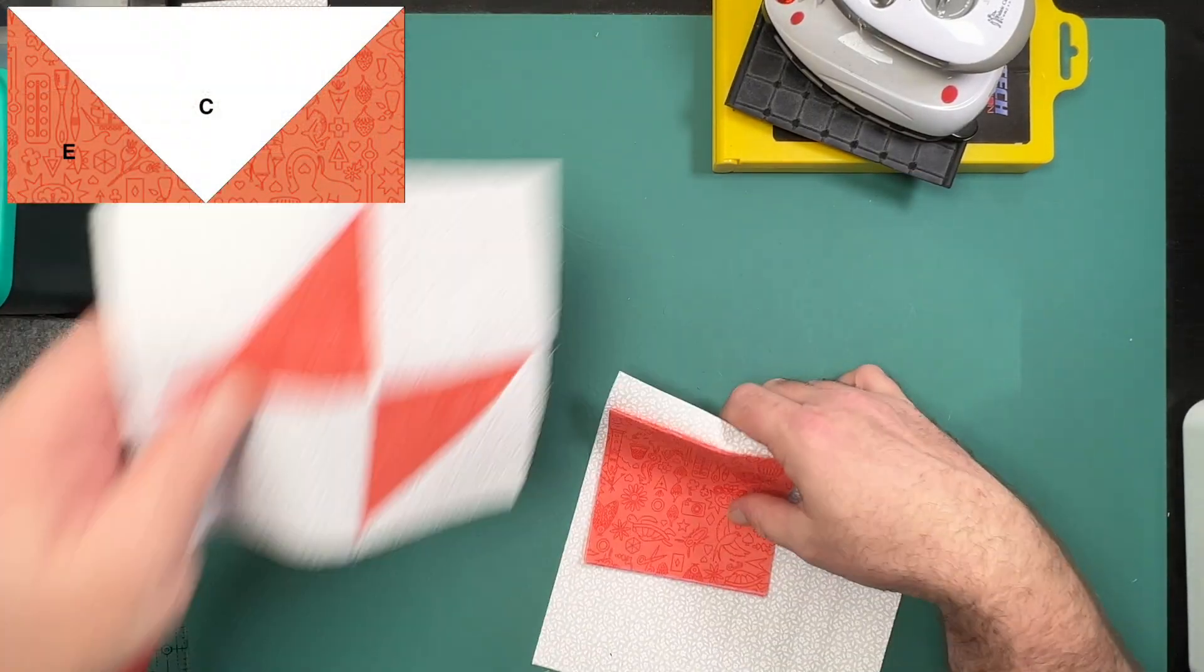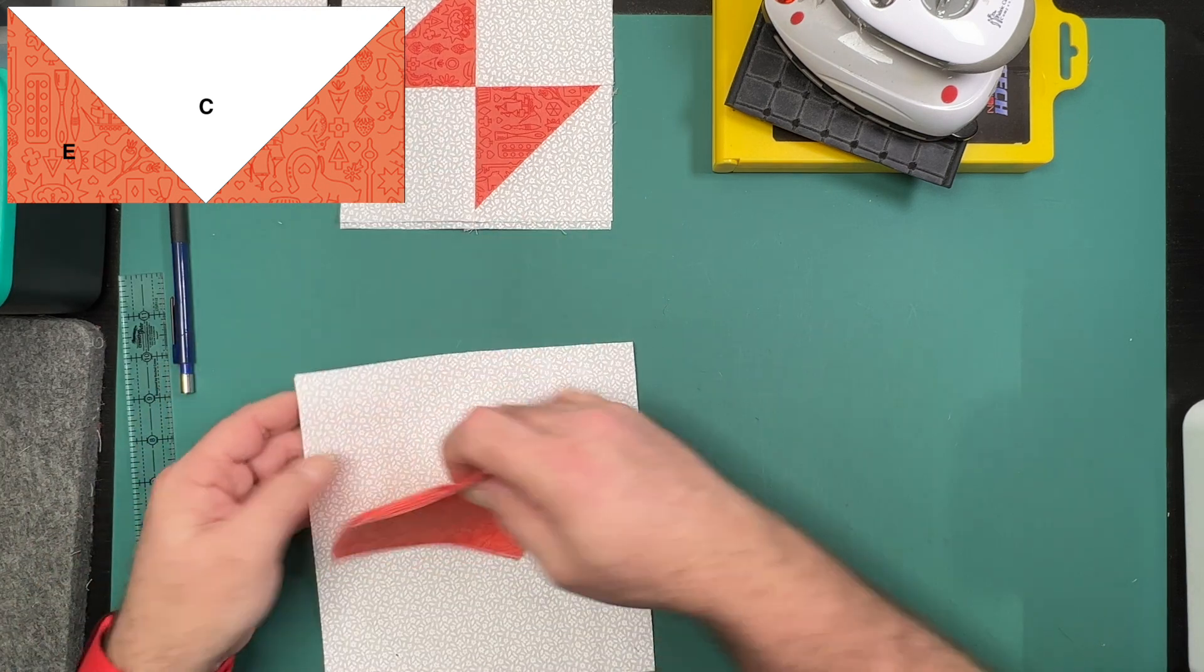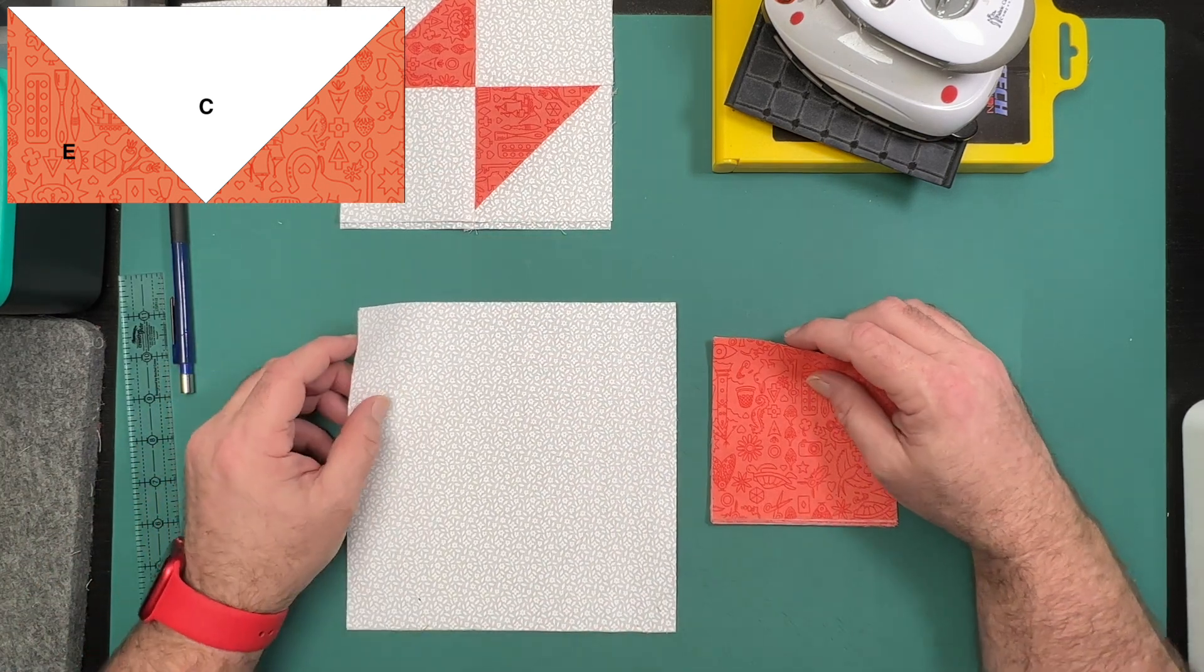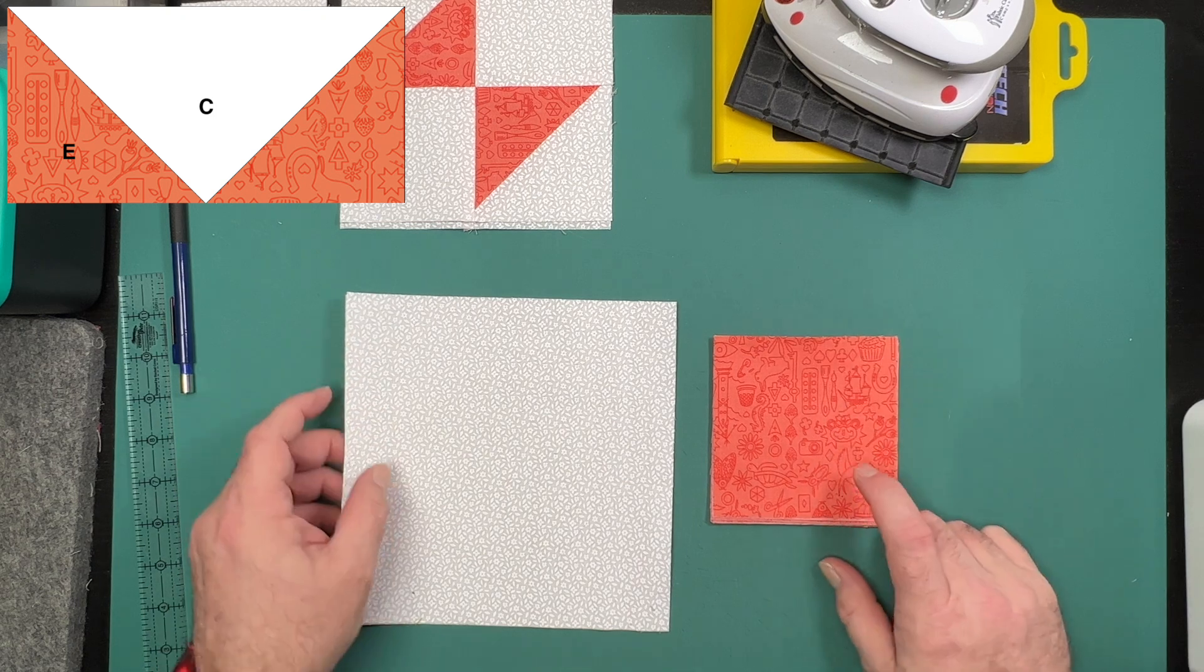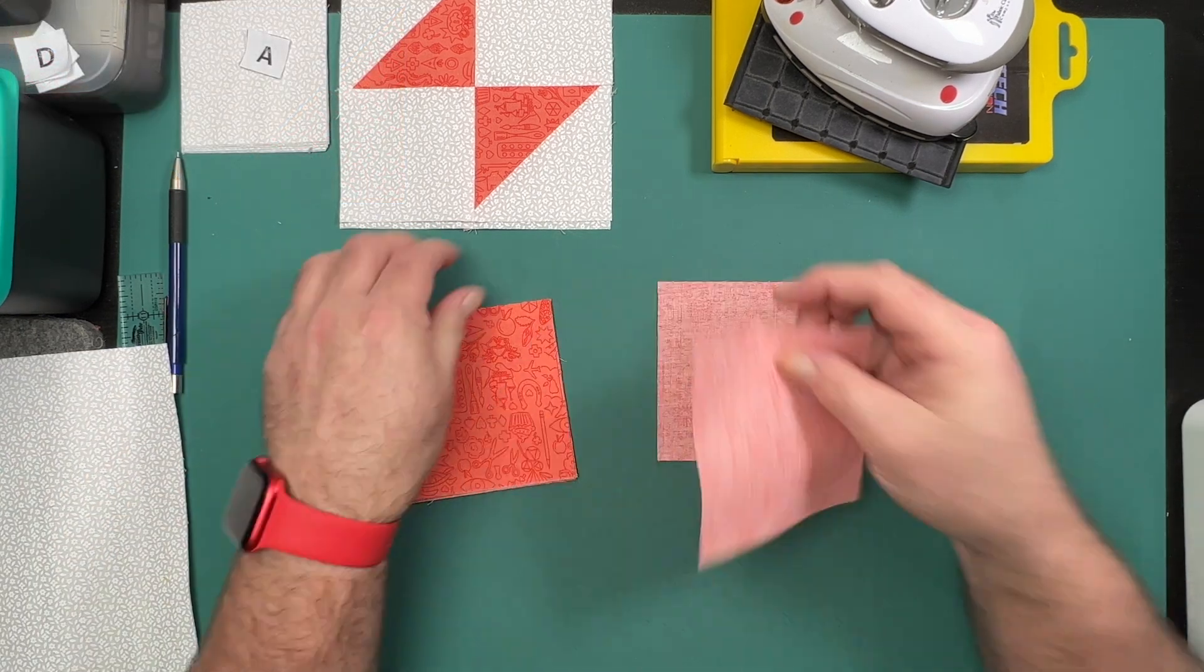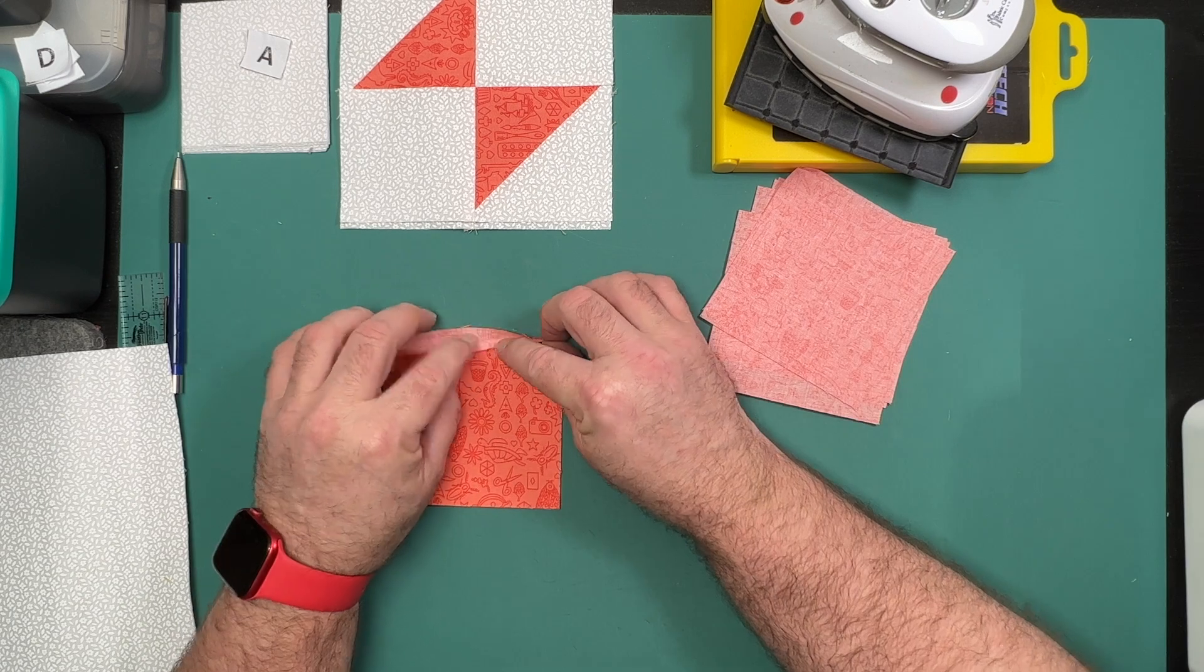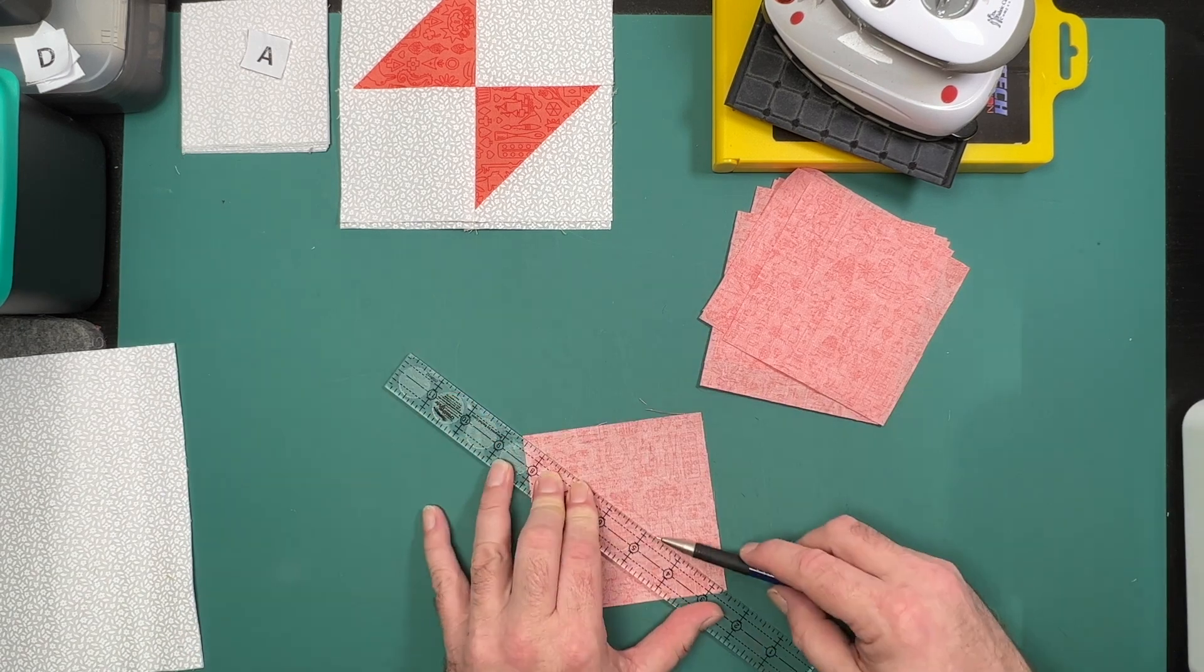We're now going to make our flying geese units. To do this we need our pieces C and E. You should have two C squares and eight of the E squares. Here we're first going to take all of our E squares and draw a diagonal line on the reverse side of these.